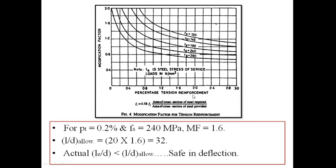Let me take one more example using the same slab. Suppose for this slab, instead of 0.2% steel, I go on increasing the steel and provide 0.4% tension steel, with FS again equal to 240 MPa. Then the modification factor will be approximately 1.3.